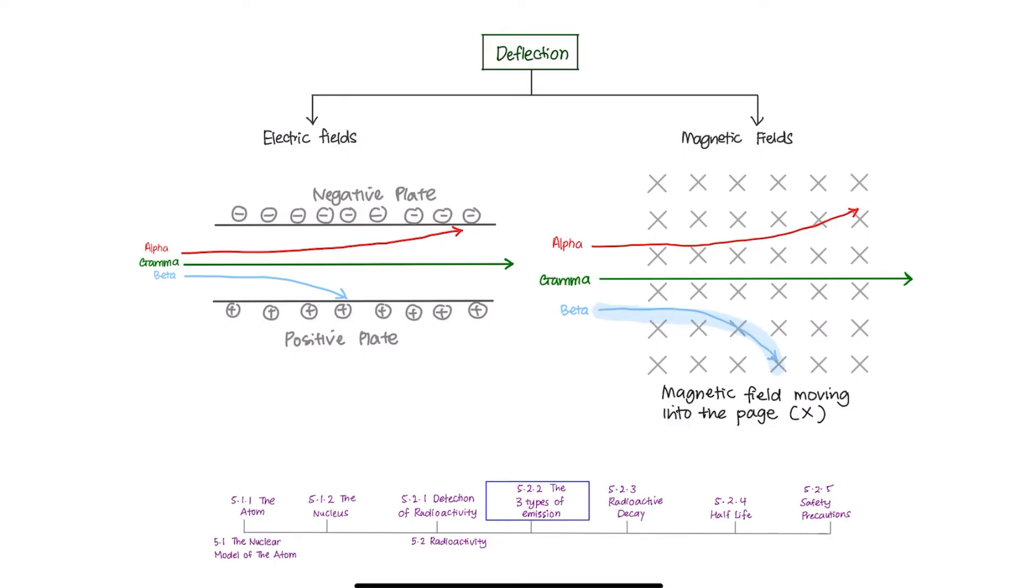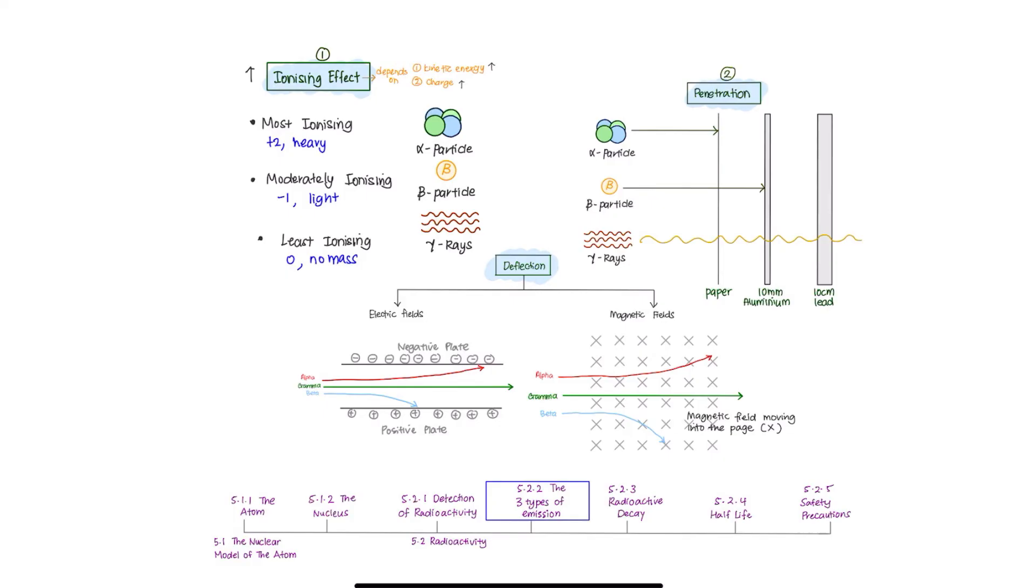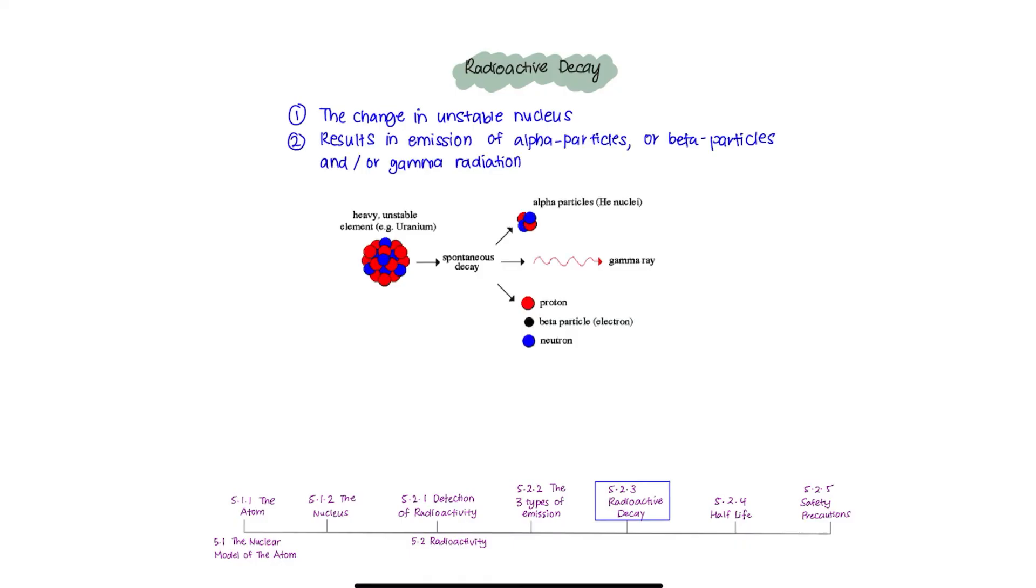Bear in mind that beta deflects at a shorter range than alpha. Okay, now that we have understood the nature and behavior of alpha, beta, and gamma emissions, let's discuss radioactivity decay. Radioactive decay is the change in an unstable nucleus resulting in emission of alpha particles or beta particles and or gamma radiation. Emission of alpha, beta, or gamma changes the nucleus into another element which is more stable. This process is spontaneous and random.